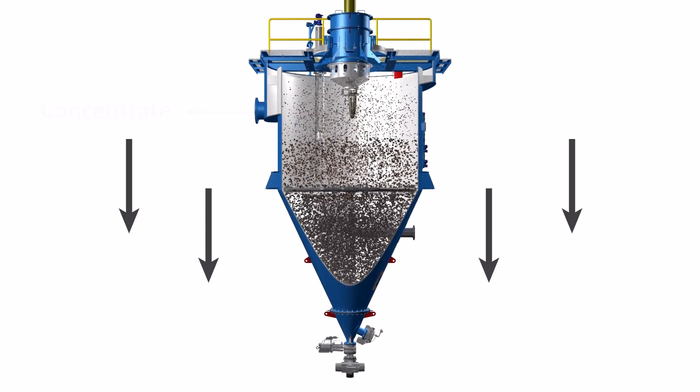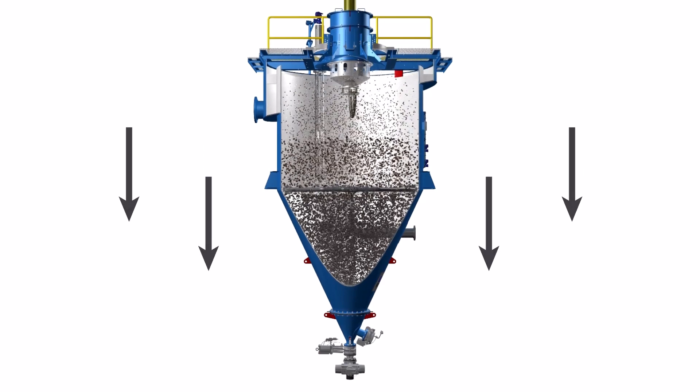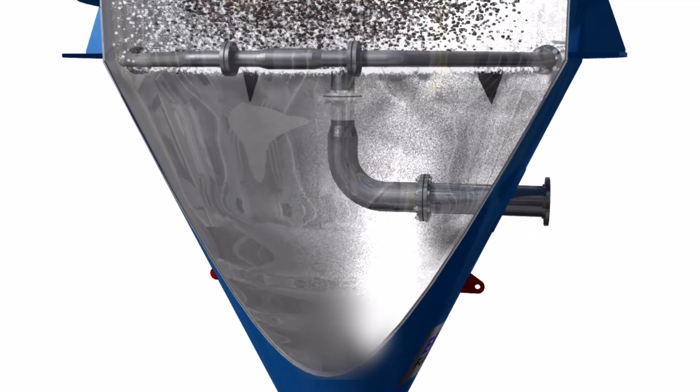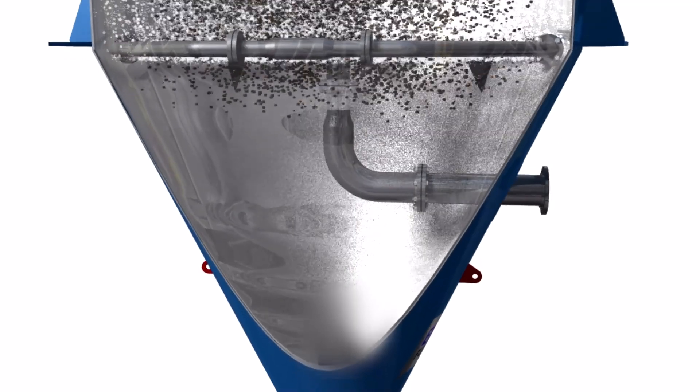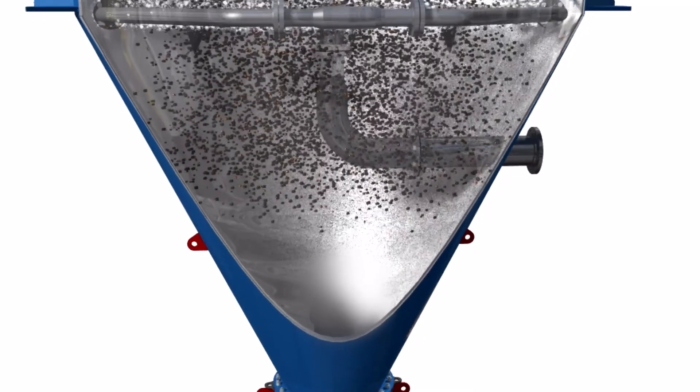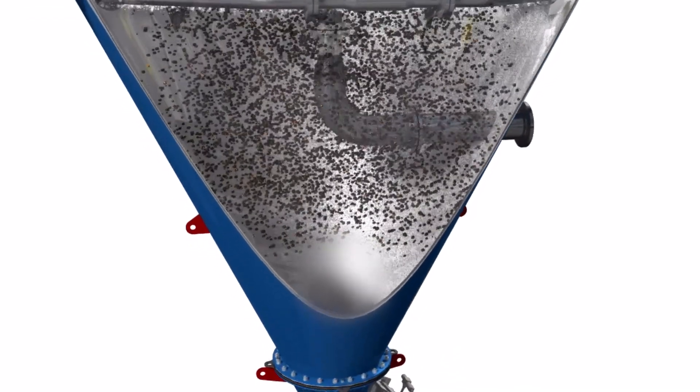Hydrophilic particles that do not attach to the air bubbles continue to move down through the fluidized bed and eventually settle into the dewatering cone. These particles are discharged at high solids concentration, around 65%, through a control valve at the bottom of the cell.